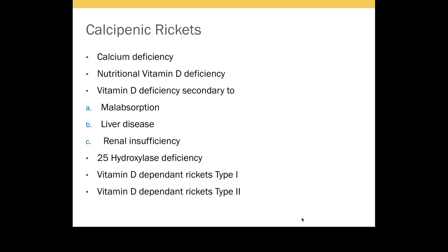When it comes to calcipenic rickets, the reasons could be either calcium deficiency in the diet, or nutritional vitamin D deficiency — which is inadequate sun exposure or low vitamin D content in the food. Most of the time it is due to poor sun exposure, because most food items are not vitamin D fortified, so it is very difficult to obtain adequate daily vitamin D solely from the diet.